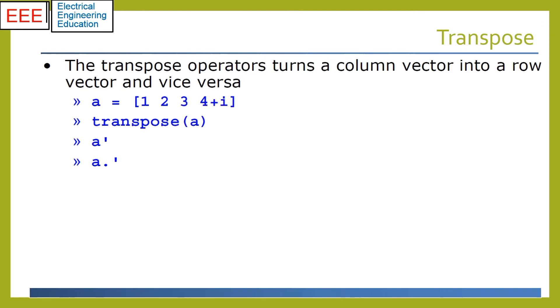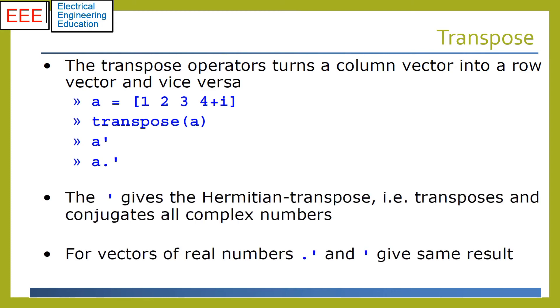The transpose operator turns a column vector into a row vector and vice versa. For real numbers, the apostrophe symbol and other alternatives result in the same conversion, while it takes the Hermitian transpose, that is, transposes and conjugation of complex numbers.